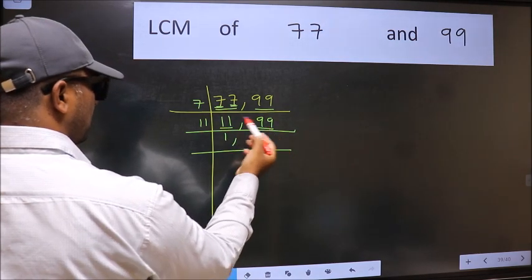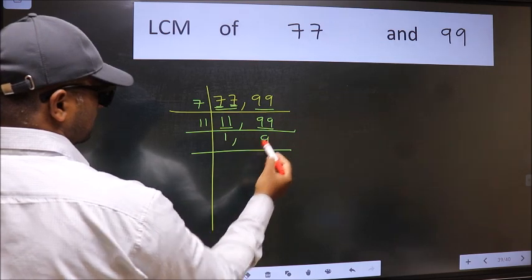The other number 99. When do we get 99 in 11 table? 11 times 9 is 99.